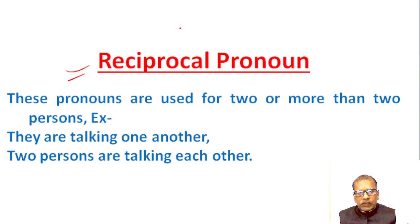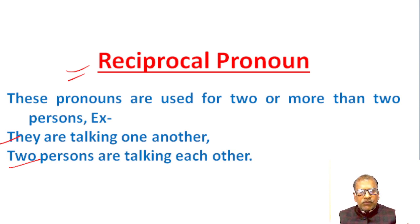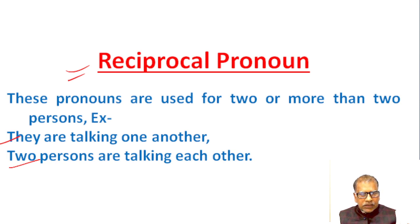Reciprocal pronouns. These pronouns are used for two or more than two persons. In the sentence 'They are talking to one another,' 'one another' is a reciprocal pronoun. 'Each other' is used only for two persons, but 'one another' is used for more than two. One another and each other are examples of reciprocal pronouns.